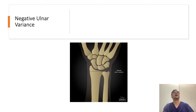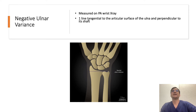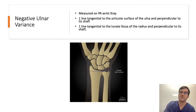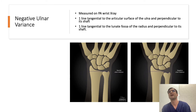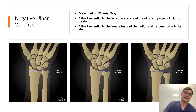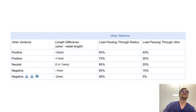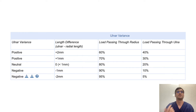So how do we work out what negative ulnar variance is? We measure on a PA X-ray — we draw one line tangential to the articular surface of the ulna, and then another line tangential to the lunate fossa on the radius. If we have an ulnar neutral patient, we want these two lines to intersect. If the ulna is short compared to the radius and these lines do not intersect, then we have a negative ulnar variance. If the ulna is long distally compared to the radius, then we have a positive ulnar variance. This is significant because it changes the forces and loads going through both bones. In a neutral condition, 80% of the load passes through the radius, and as you get negative ulnar variance, more and more load goes through the radius — and that's relevant to Kienböck's disease because there's more contact between the radius and the lunate.